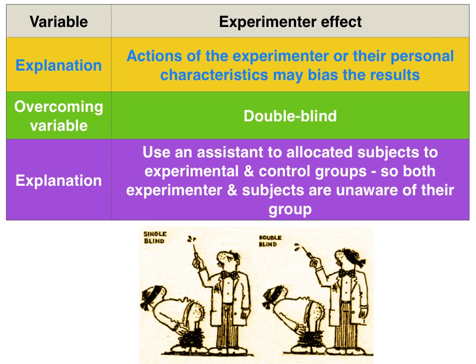In order to overcome the experimenter effect, we need to use a double blind procedure, where an assistant allocates subjects to either the control or experimental groups, so that both the subjects and the experimenter are unaware as to who's in the control group and who's in the experimental group. This needs to be maintained for not only the instructional part of the experiment, but also the treatment of the data, so the experimenter's actions in terms of data treatment don't have an extraneous effect on the DV.